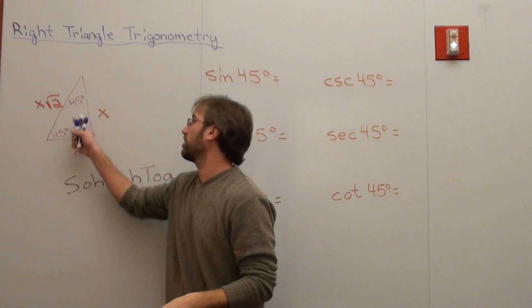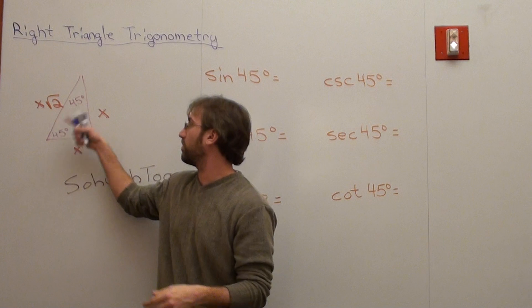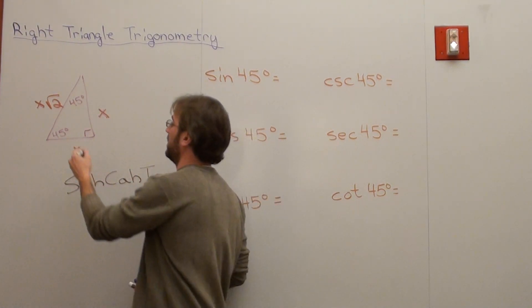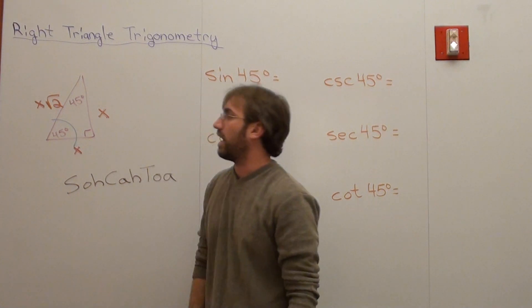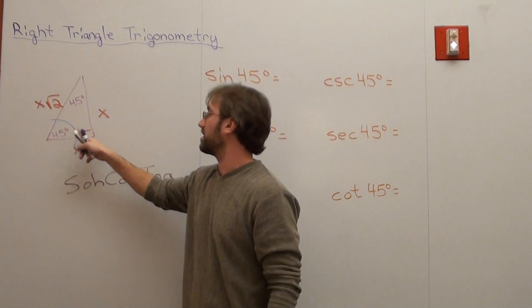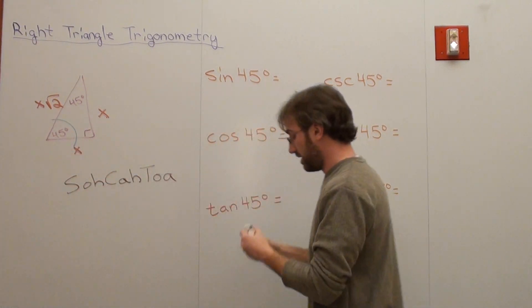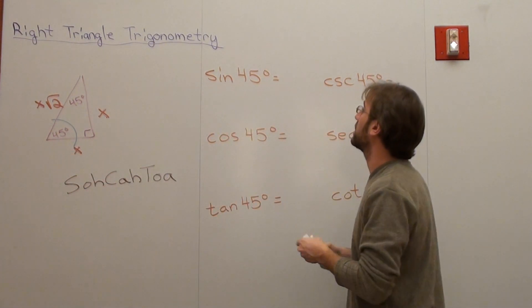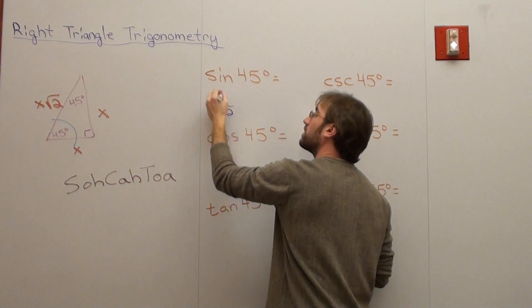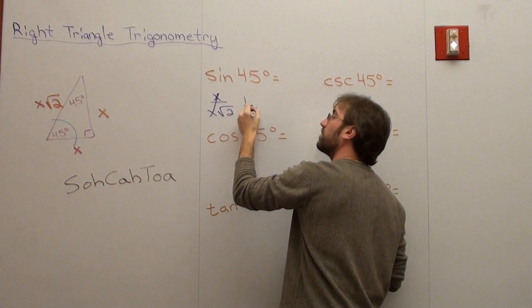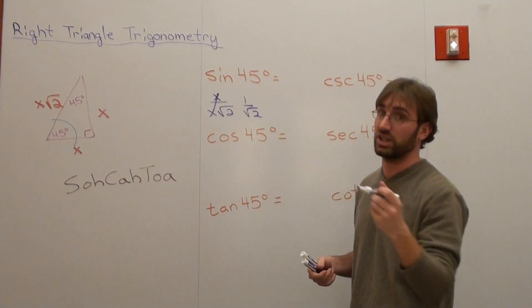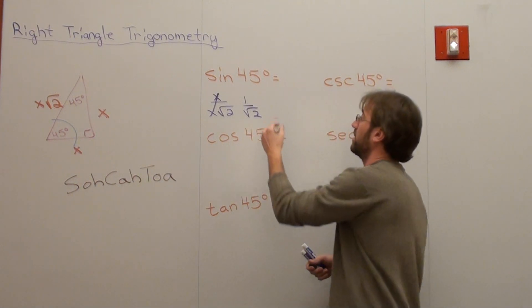So I'm going to go ahead and do the sine of 45 degrees. And people are going to say, well, which 45 degrees do you take? It doesn't matter. Both 45 degrees are the same. It's the beauty of 45-45-90 triangles. So we'll do this one. And basically the sine of 45 degrees is the opposite over the hypotenuse, which is x over x root 2, which is 1 over root 2 when the x is canceled.